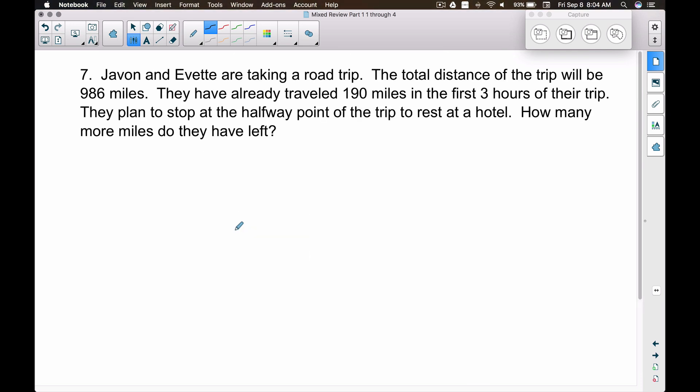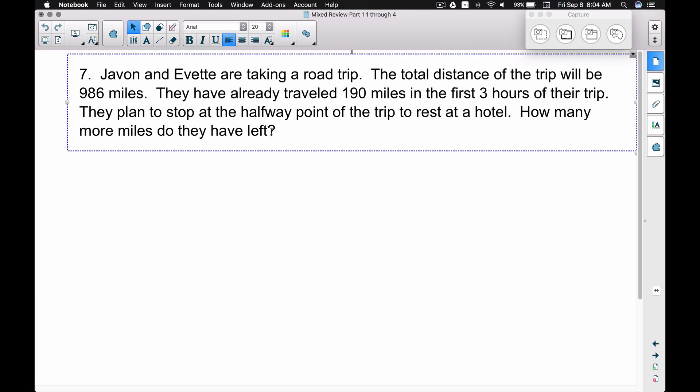Number seven, the last one for this part of the tutorial is Javon and Yvette, they're taking a road trip. The total distance of the trip will be 986 miles. They have already traveled 190 miles in the first three hours of their trip. They plan to stop at the halfway point of the trip to rest at the hotel. How many more miles do they have left? And I'm going to reword this until they get to the halfway point or until they get to the hotel. And the reason why I want to say that is because that question was a little bit misleading there. You might say, well, how many miles do they have left until they get to the end of their road trip or until they get to the halfway point? So I added this little bit of extra literature right here to get that point across.